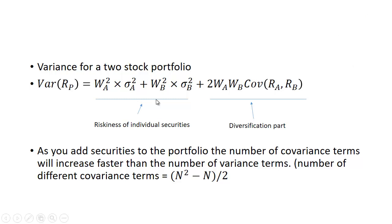The first part measures the riskiness of the individual securities, while the covariance part measures the diversification component. As you add securities to the portfolio, the number of covariance terms will increase faster than the number of variance terms. The number of different covariance terms is equal to N squared minus N, divided by 2.